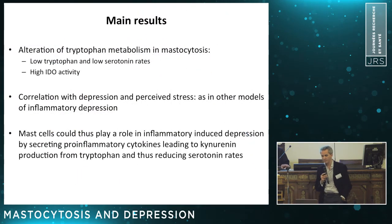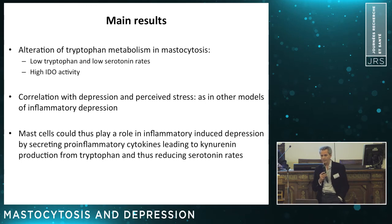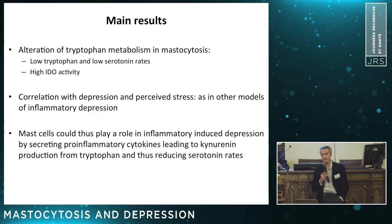What are the main results of these two studies? We found alteration of tryptophan metabolism in mastocytosis, with low tryptophan and low serotonin rates due to high IDO activity. We found a correlation with depression and perceived stress — basically what was found in other models of inflammatory depression, for instance the work on interferon-treated patients. So mast cells could play a role in inflammatory-induced depression by secreting pro-inflammatory cytokines, leading to quinolinic acid production and eventually to a quinolinic acid increase.